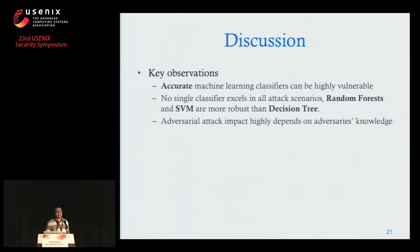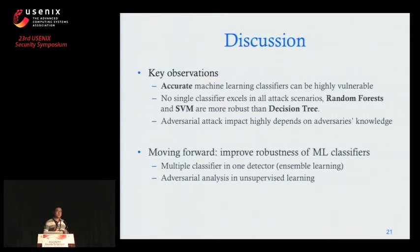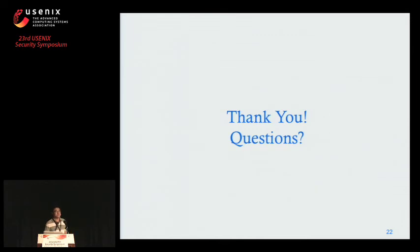To wrap up: more accurate classifiers can be highly vulnerable even to simple countermeasures from adversaries, and no single classifier is constantly robust against all adversarial attacks. Overly simplified models like decision trees are particularly vulnerable. It's very important to limit adversaries' knowledge about your classifier. As future work, we're interested in improving the robustness of machine learning classifiers — one direction is ensemble learning, integrating multiple classifiers so that if adversaries break one, others compensate. Another direction is adversarial machine learning attacks in unsupervised learning scenarios. Thank you.